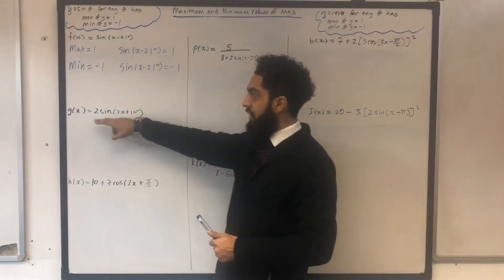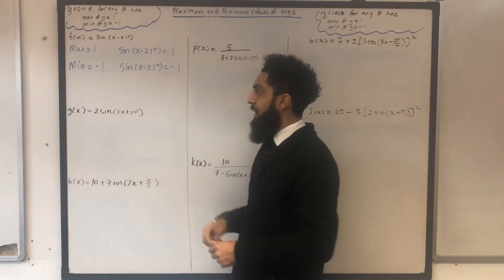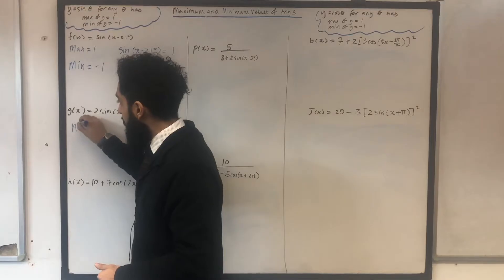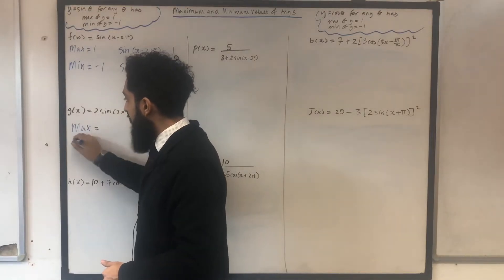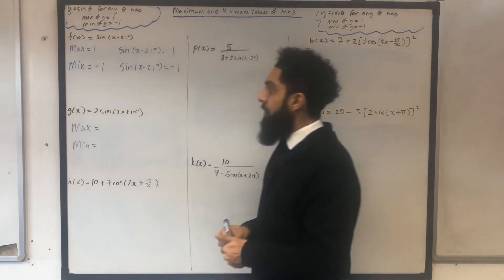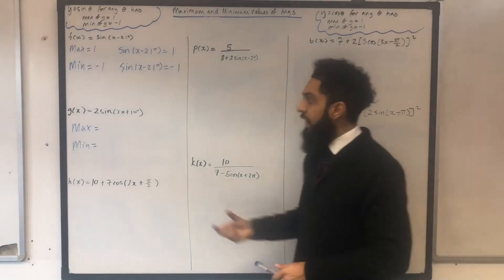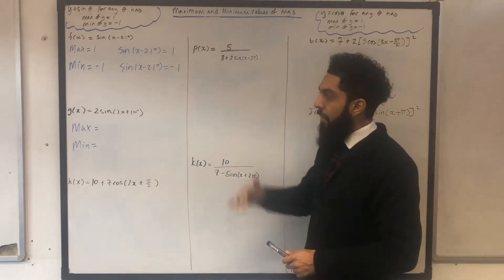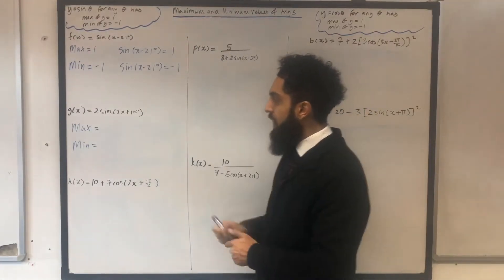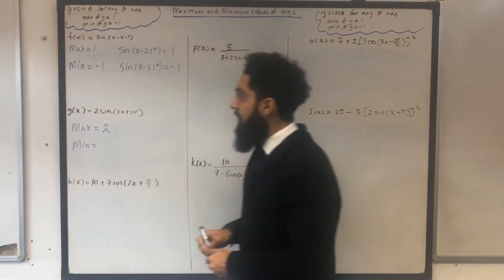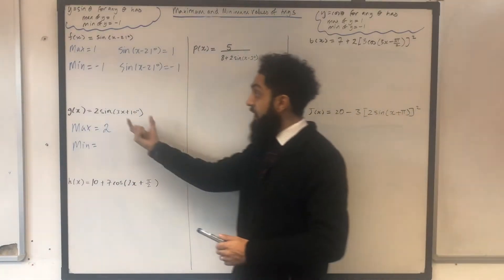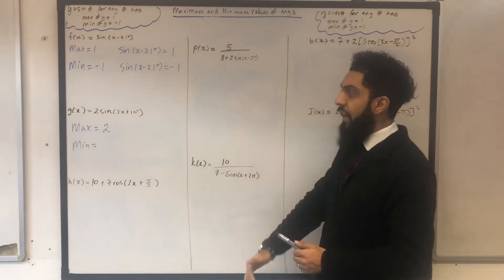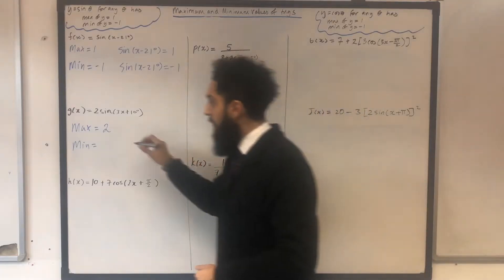Next function: g of x, which is equal to 2 sine in bracket 3x plus 10 degrees. I could be asked to work out the maximum value and the minimum value of this particular function. To maximize g of x, I need to maximize my sine, and the maximum value of sine is 1. So the maximum value of g of x is 2 times 1, which is 2. To minimize g of x, I need to minimize my sine, and the minimum of sine is minus 1. Hence the minimum of g of x is 2 times minus 1, which is minus 2.